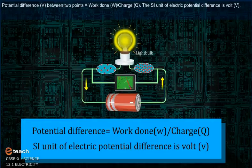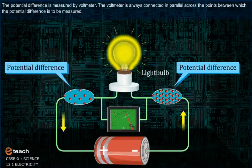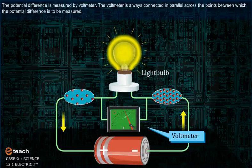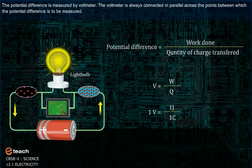Potential difference V between two points is equal to work done W upon charge Q. The SI unit of electric potential difference is volt, V. The potential difference is measured by voltmeter. The voltmeter is always connected in parallel across the points between which the potential difference is to be measured.